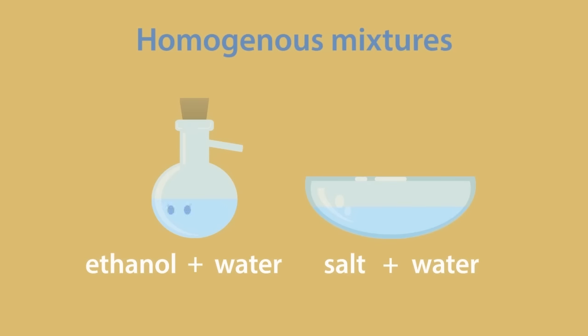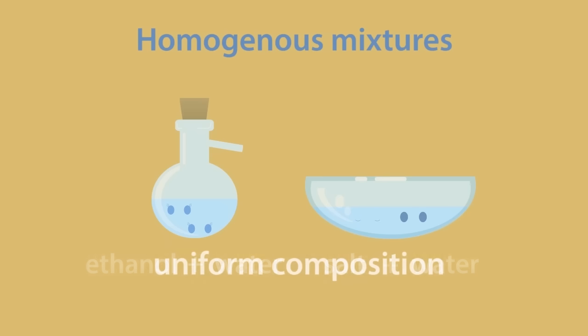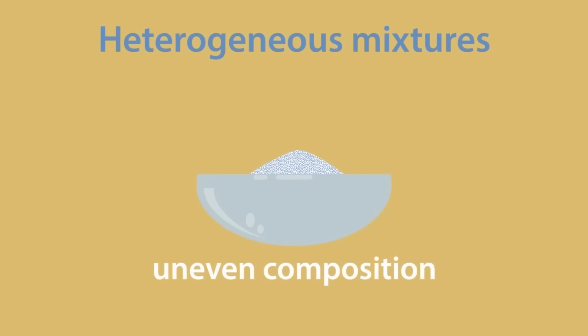This means that the components of the mixture are in the same phase, or the composition of the mixture is uniform throughout. Now, we will look at separating heterogeneous mixtures, where the components in the mixture are not in the same phase, or the composition of the mixture is uneven. If we have a mixture of sulfur and iron filings...